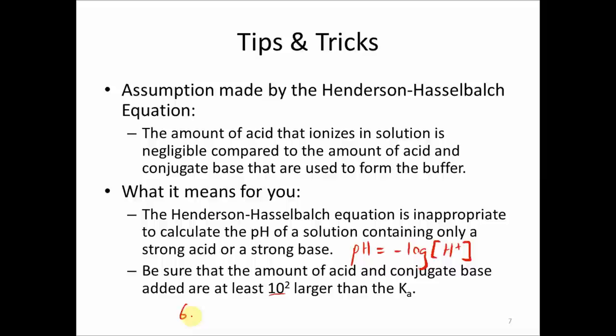So you need to be sure that the amount of acid and conjugate base that are added are at least about 100 times larger than the Ka. So in our case, the Ka was 6.3 times 10 to the minus 5. So that means that you would want to add at least about 10 to the minus 3 moles of the conjugate acid-base pair in order for the assumption made by the Henderson-Hasselbalch equation to not be violated.